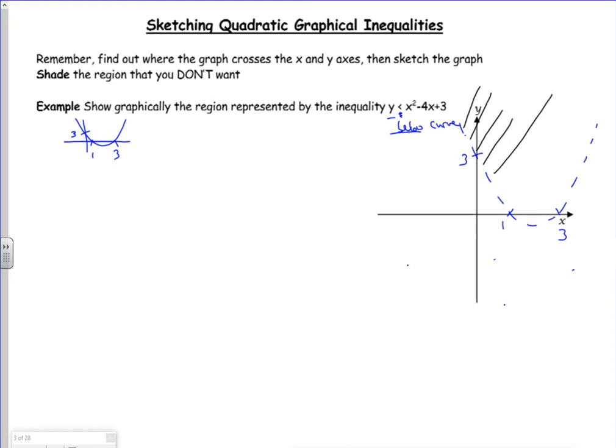When I show you on your graphical calculator how to do it, you can just switch the inequality on your calculator, but just remember you've switched the inequality. So this is y is less than x squared minus 4x add 3. Right, so look at the next example then.